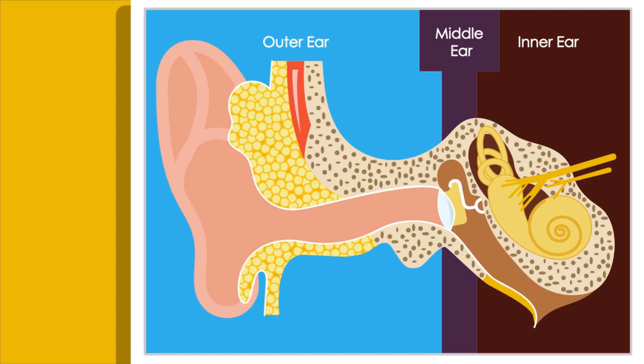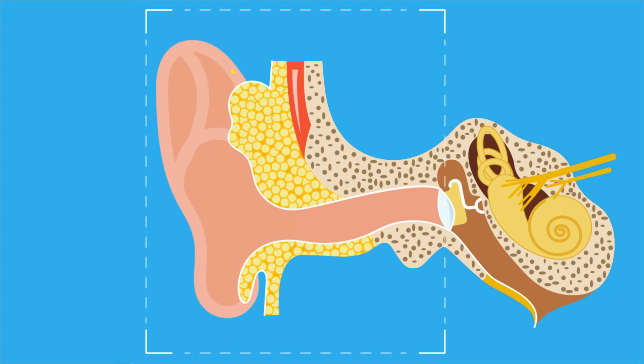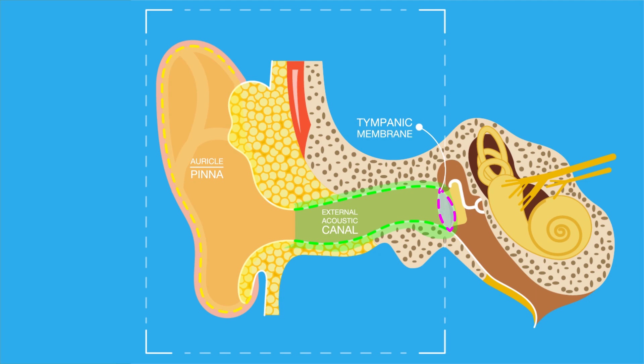Its three parts are: 1. Auricle or Pinna, 2. External Acoustic Canal, and 3. The Tympanic Membrane.